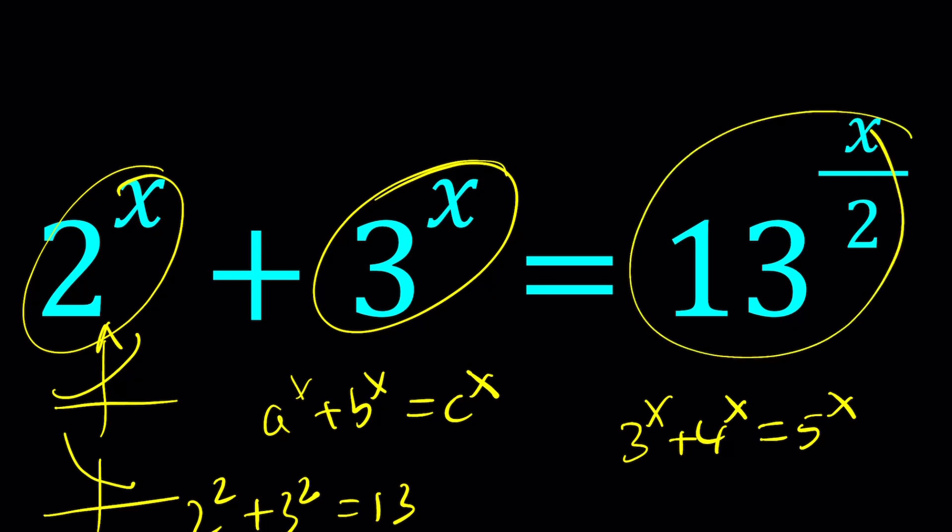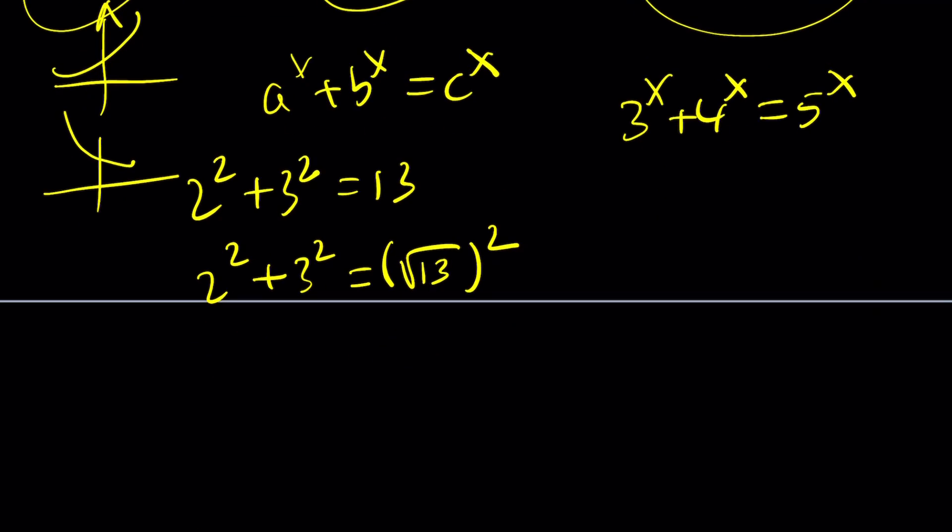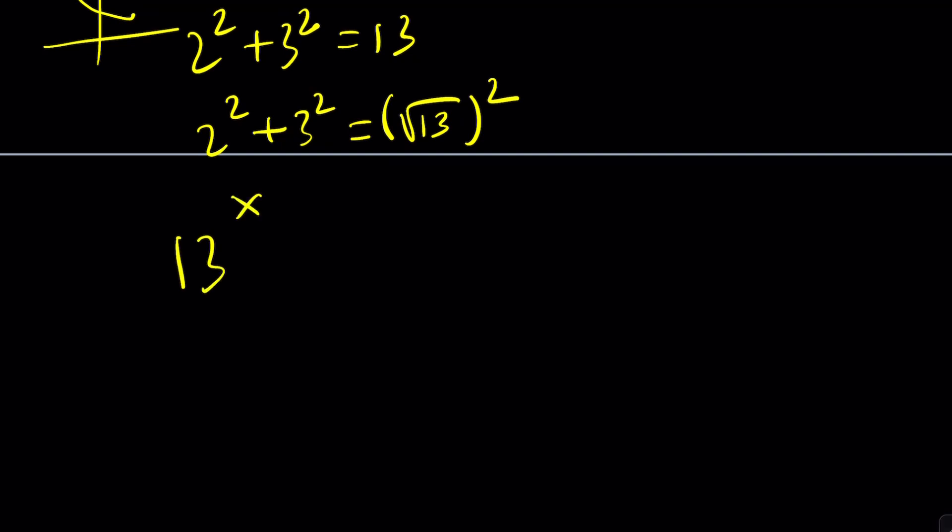This is also increasing. But what about the x over 2? 13 to the power x over 2 can be written as 13 to the power 1 half to the power x, because x over 2 is the same as 1 half times x. A lot of people struggle with this, but this is a very important property.